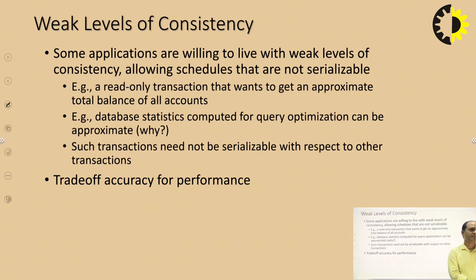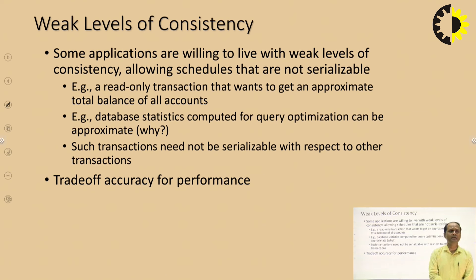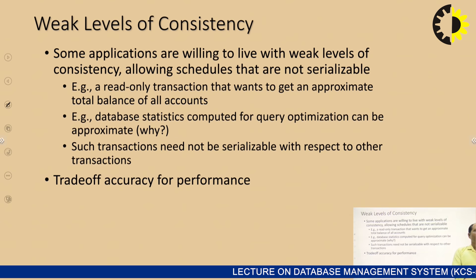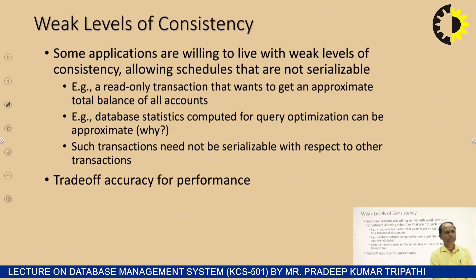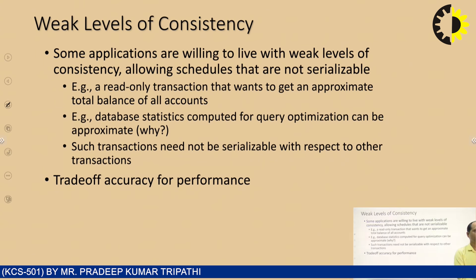Weak level of consistency: some applications are willing to accept a weak level of consistency by allowing non-serializable schedules. For example, a read-only transaction that wants to get an approximate total balance of accounts, or a query optimization calculation in the database — these give a weak level of consistency. Such transactions need not be serializable with respect to other transactions, requiring a trade-off between ACID properties and performance.